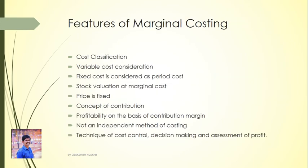Let us see the features of Marginal Costing. Number one is Cost Classification. In marginal costing, all costs are classified into fixed cost and variable cost, and in some cases semi-variable costs are also classified. Cost classification is one of the key features of marginal costing.